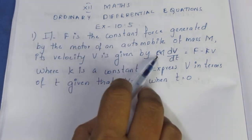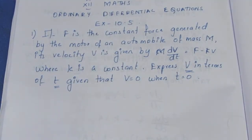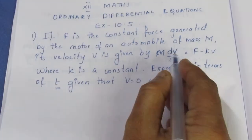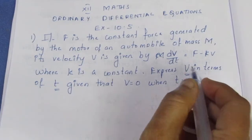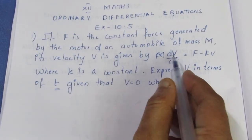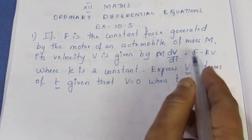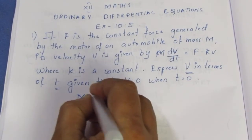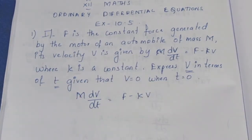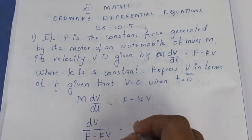Now, we have mass, velocity, force. We need to express V in terms of T. We can see dV/dt. V is the variable, T is the variable. If we rearrange, we can separate variables. So dV by (F minus KV) is equal to dt by M.